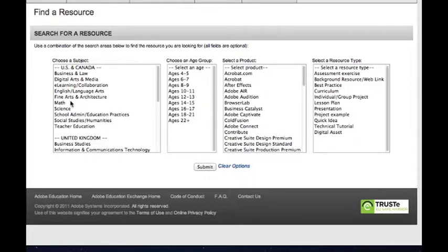But, you know, since I've pointed that out, I'm going to go ahead and click on math. I'm not going to click on an age. I'm not going to click on a product or a resource type. I'm just going to leave it as is. Click submit. Let's see what we can get here.